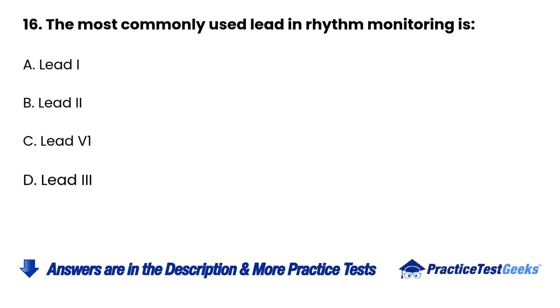16. The most commonly used lead in rhythm monitoring is: A. Lead 1. B. Lead 2. C. Lead V1. D. Lead 3.